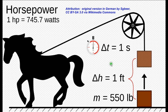A fellow by the name of James Watt in 1782 decided to quantify that. He did some testing with horses to see how much work they could perform by lifting weights, and came up with the result that an average horse could lift 550 pounds one foot in one second. So that was defined as one horsepower.